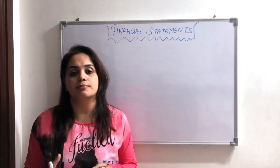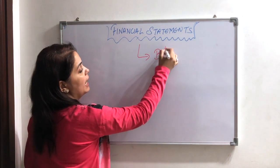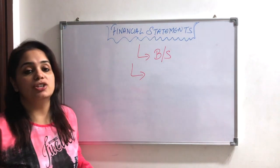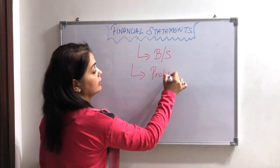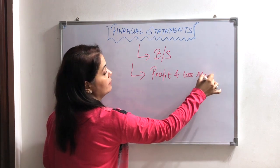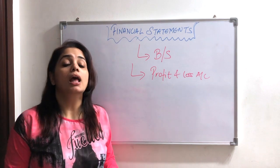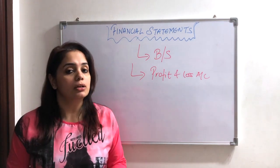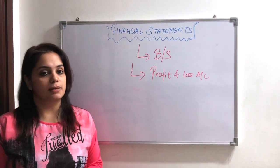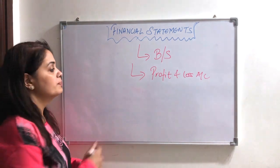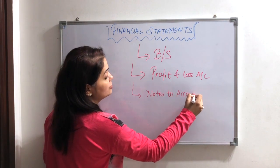What are the things included in financial statements? Number one is your balance sheet. In addition, our profit and loss account also comes. And next, we make notes to accounts. Notes to accounts are also part of our financial statements.